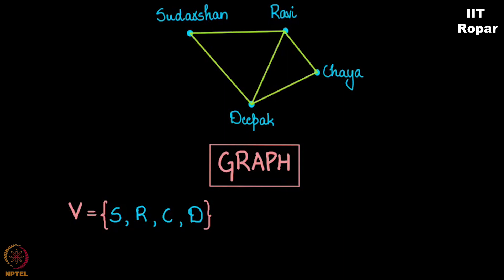And I will write another set E which is SR. You know what I mean. RC, RD, CD, and SD. So these five things that I have written here represents five lines here.